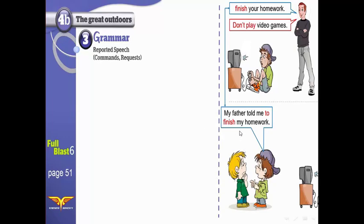Can you see that? This sentence is the same — but what is the difference? 'Finish' is the main verb of the sentence. Here the same verb 'finish' appears again. What is the difference between the verb here and here? Yes, you are right — we put 'to' before the verb. We need the main verb with 'to': the base form of the verb with 'to'. And also, we need a reporting verb.